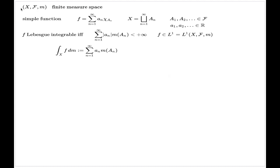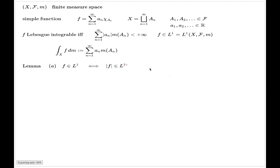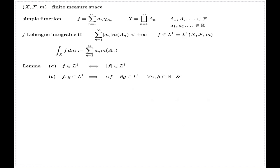Before I can define the Lebesgue integrable function in full generality and give the definition of the Lebesgue integral, I need this auxiliary lemma applicable to the Lebesgue integration of simple functions. The lemma has a few parts. Part (a) says that a simple function f is integrable if and only if its absolute value, which is also a simple function, is integrable. Part (b) says that if two simple functions f and g are integrable, then any linear combination is also Lebesgue integrable for any scalars alpha and beta, and the integral of the linear combination equals the linear combination of the individual integrals.